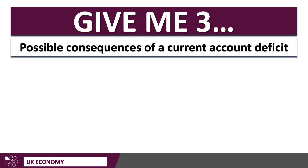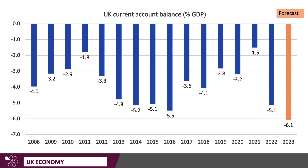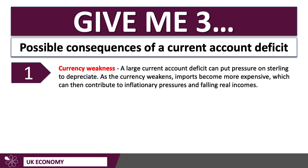Let me walk you through three possible consequences of a current account deficit. Does it matter that we're running a deficit in excess of 5–6% of GDP? The first consequence is currency weakness. A current account deficit means there's a net outflow of money from the economy — our spending on imports is greater than the value of the things we export alongside the transfers and primary income. So a big current account deficit can put downward pressure on sterling.